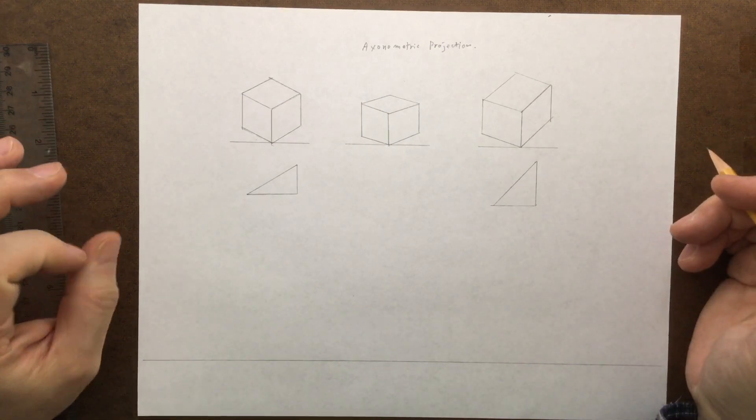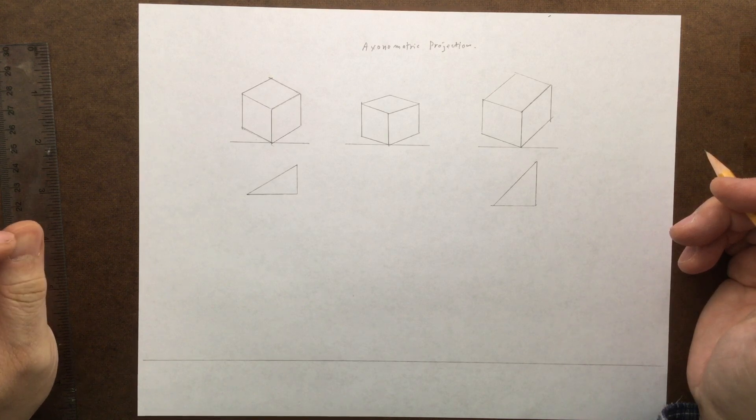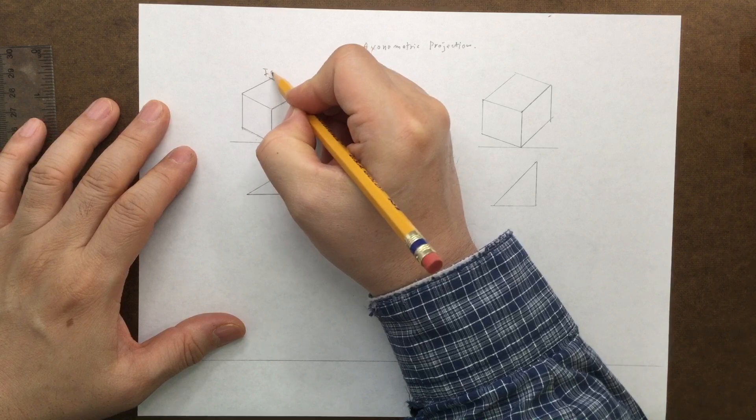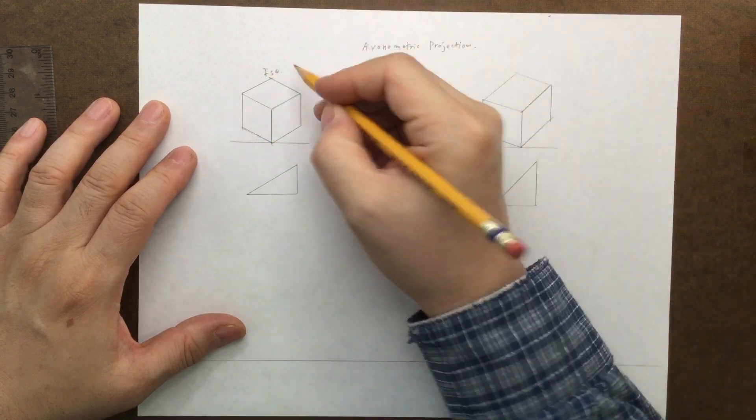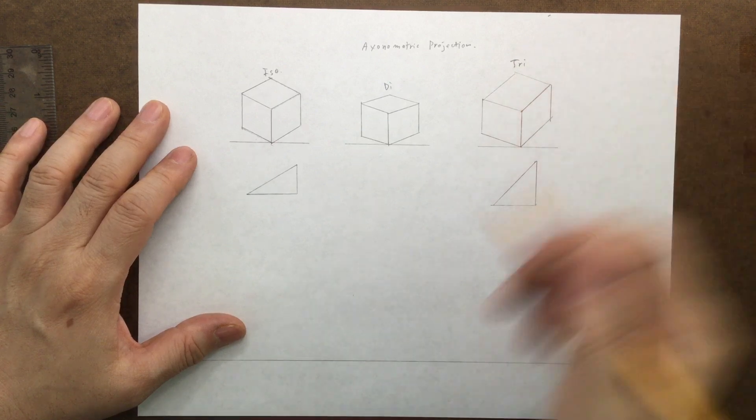Today we're going to recap what we learned about axonometric projection. This axonometric has three things we can do: isometric, dimetric, and trimetric.